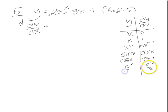dy/dx: e to the x, 2 lots of goes to e to the x. Minus 3 lots of x goes to 1. Minus a constant, which goes to 0.